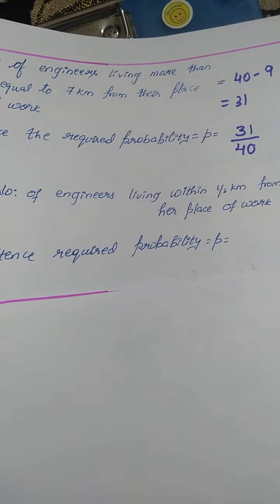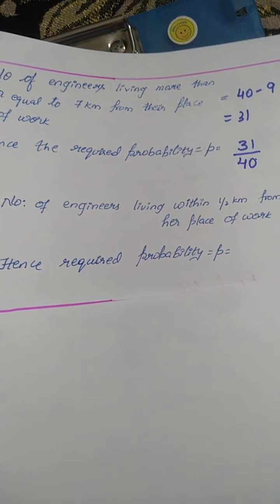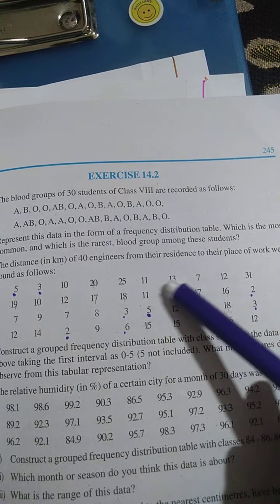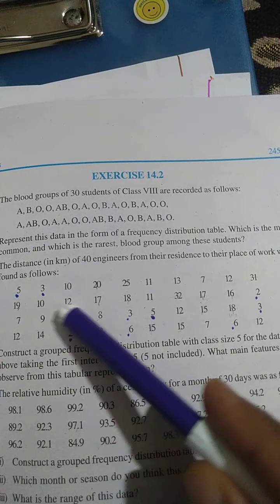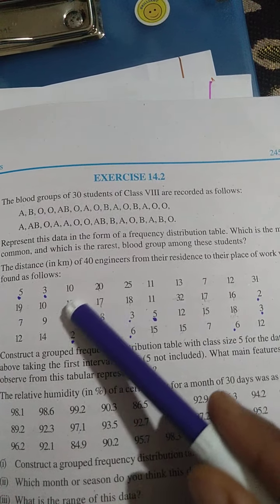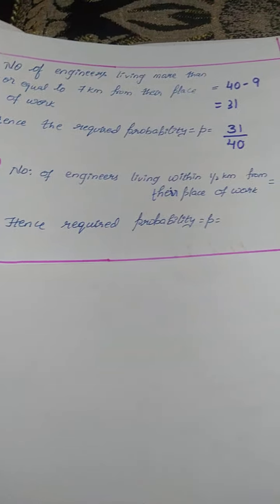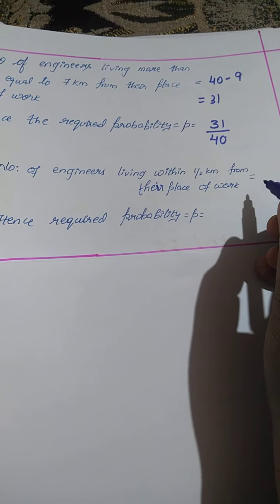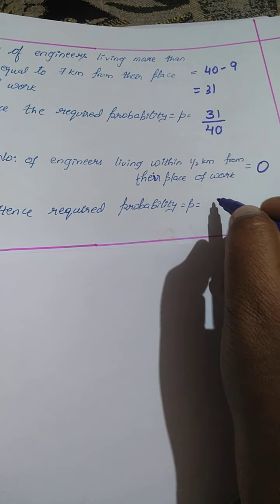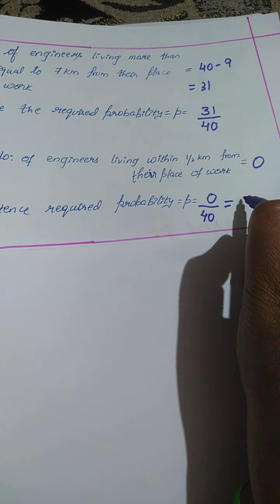Next question is number of engineers leaving within half kilometer from their workplace. Your third question was less than half kilometer. Can you check here children? All are in round figures only. No numbers are in half kilometer. Since no chances of half kilometers, we should write number of chances as 0. Hence, probability is also 0. So, for number of engineers living within half kilometer from their place of work is 0, and probability is 0 by 40, which equals 0.